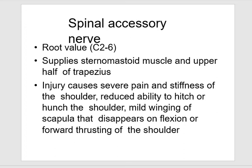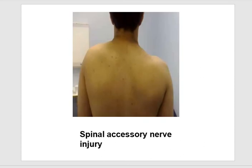Spinal accessory nerve injury (C2–C6) supplies the sternomastoid and upper half of trapezius. Injury causes severe pain and stiffness of the shoulder, reduced ability to hitch or hunch the shoulder, and mild winging of the scapula that disappears on flexion or forward thrusting of the shoulder.